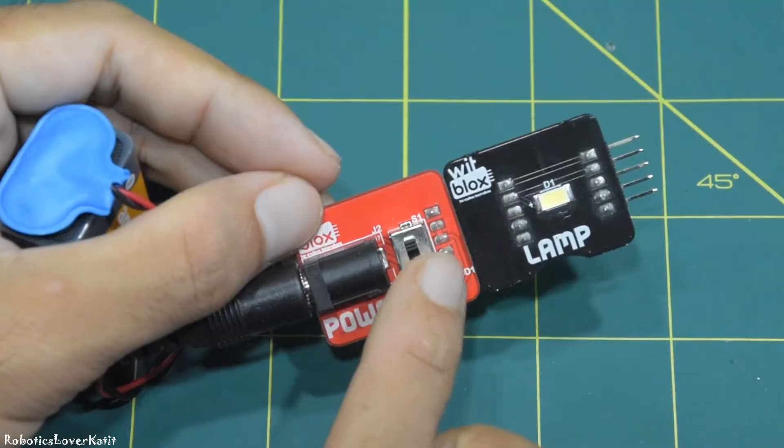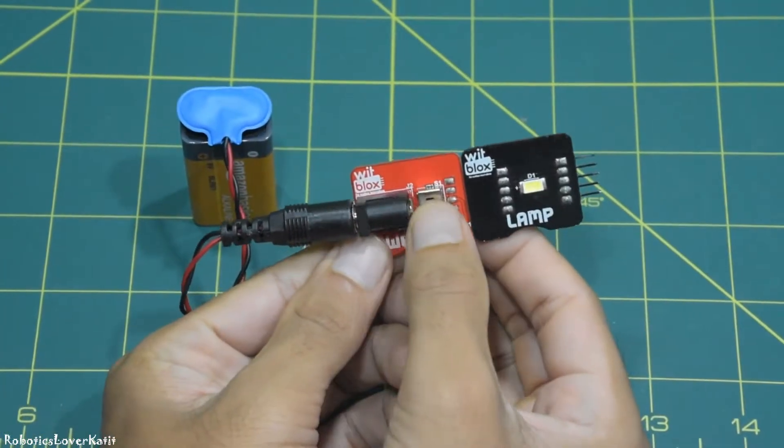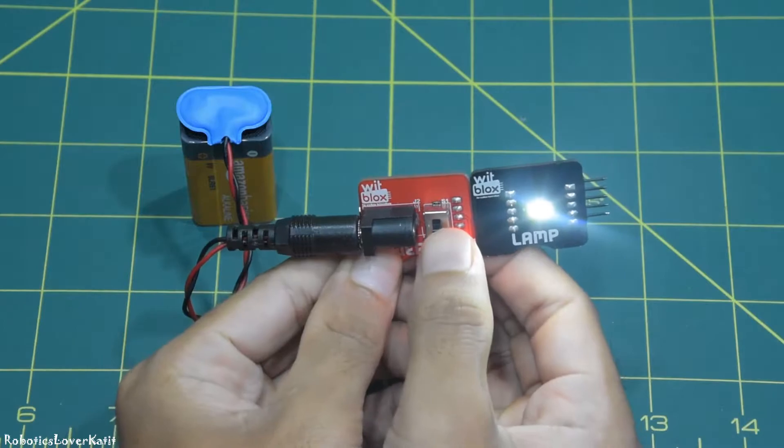This is a switchboard torch. Now let's see how it works. When power is on, the lamp is on.